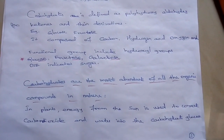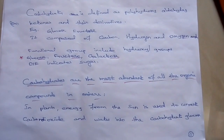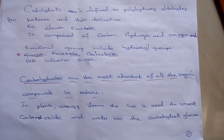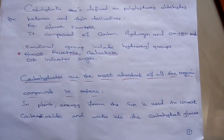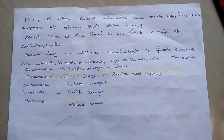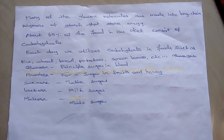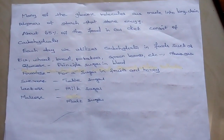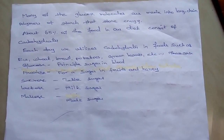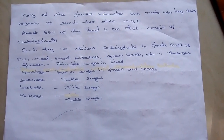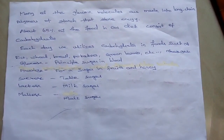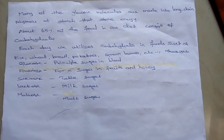Carbohydrates are the most abundant of all the organic compounds in nature. In plants, energy from the sun is used to convert carbon dioxide and water into the carbohydrate glucose. Many of the glucose molecules are made into long chain polymer of starch that store energy. About 65% of the food in our diet consists of carbohydrates. Each day we utilize carbohydrates in foods such as rice, wheat, bread, potatoes, green leaves, etc.